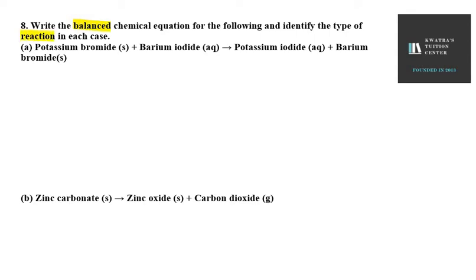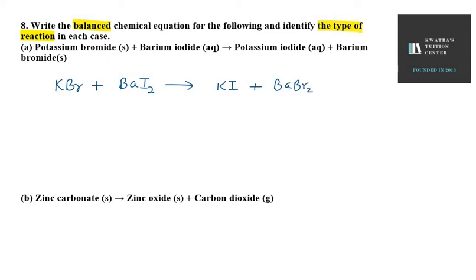So we need to tell them the type as well. In the first part, we have potassium bromide — KBr — plus barium iodide — BaI₂ — which gives us potassium iodide — KI — plus barium bromide — BaBr₂.